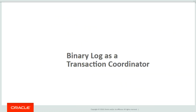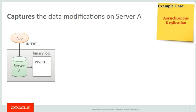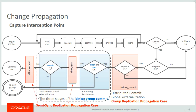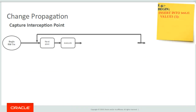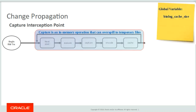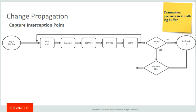Binary log as a transaction coordinator: the flow of data modifications captured in the binary log buffer and files on a server is known as capture flow. The transferring of data modifications and receiving acknowledgements from replicas or members is known as change propagation. In this flow chart, I'll show both capture flow and change propagation. When a read-write transaction begins, statements are parsed and executed, then data changes are captured, encoded to events, and cached into a transaction cache. Capture is an in-memory operation which can overspill to temporary files based on the bin log cache size settings. The capture process continues until a commit or rollback is hit.